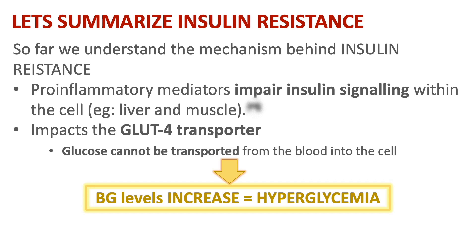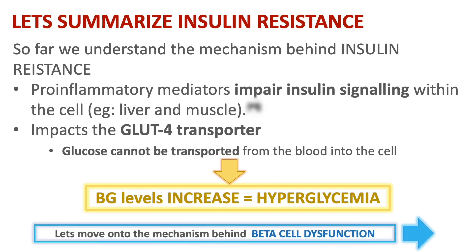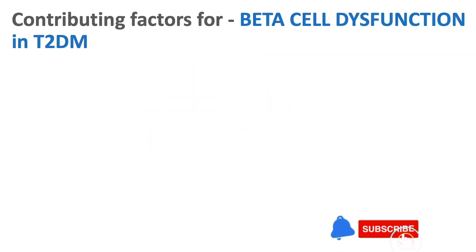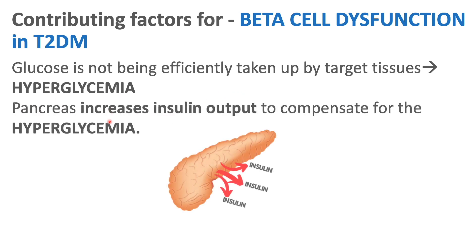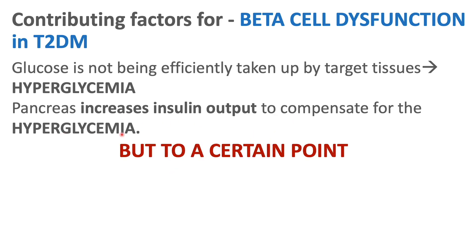Now let's move on to beta cell dysfunction and see the mechanism behind this and how it affects insulin release. Let's look at the contributing factors for beta cell dysfunction. With glucose not being efficiently taken up by the target tissues, there's more glucose in the blood, leading to hyperglycemia. The pancreas will increase its insulin output to compensate for this hyperglycemia, but only to a certain point.